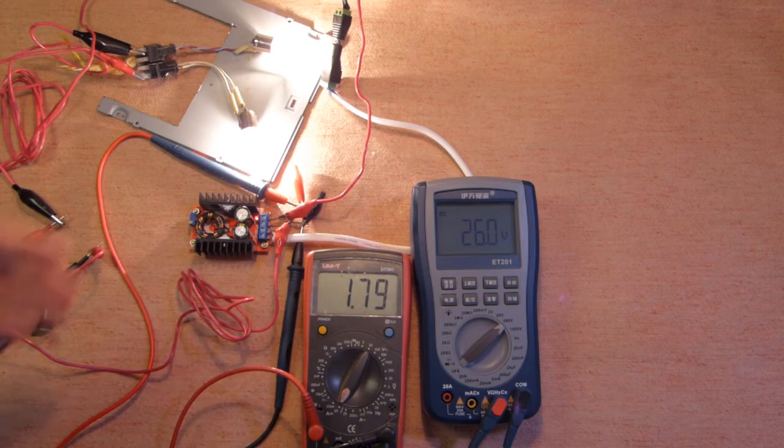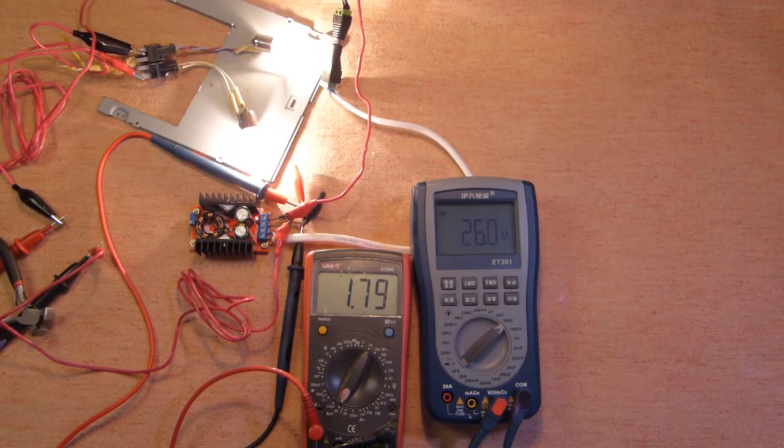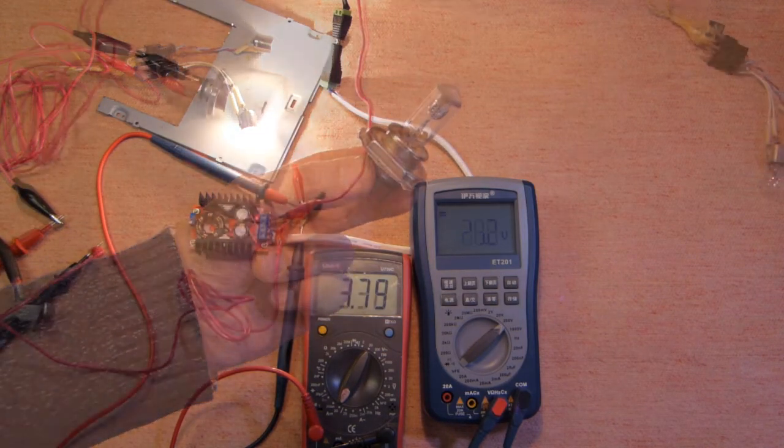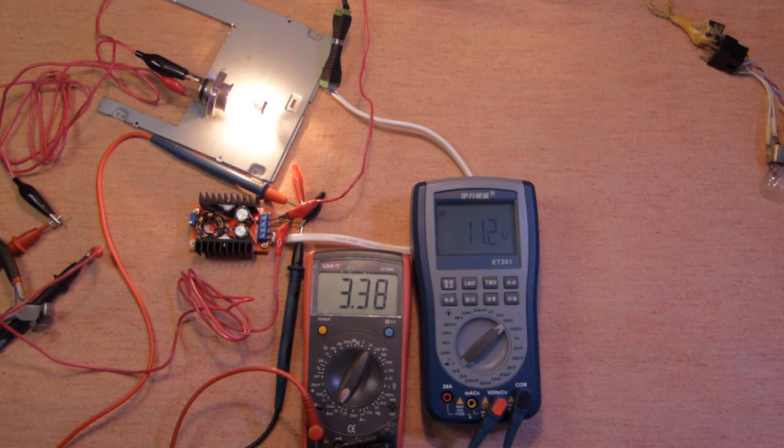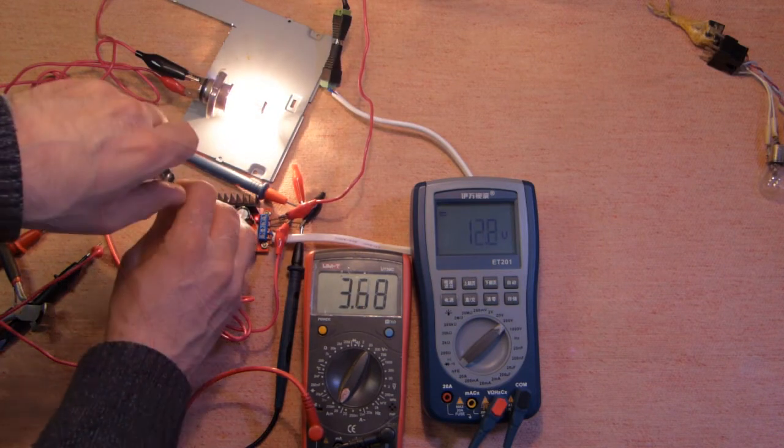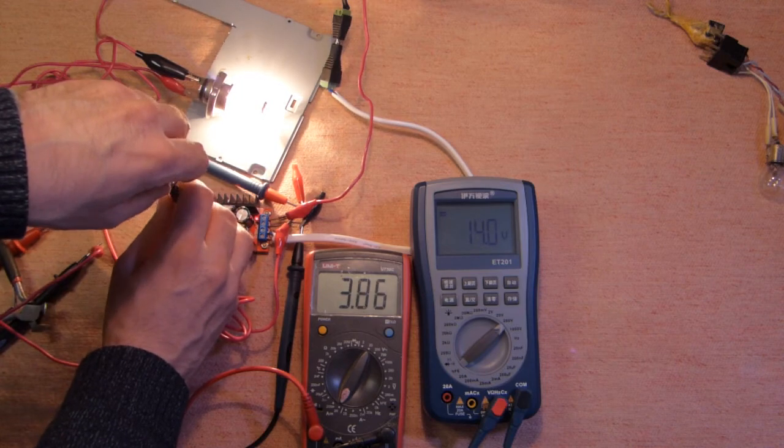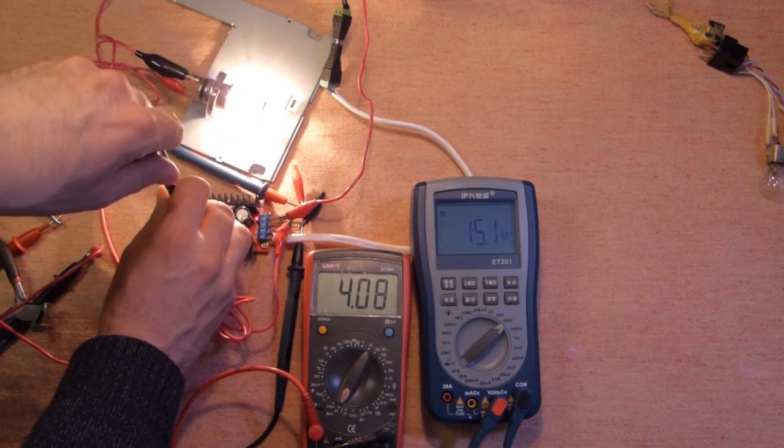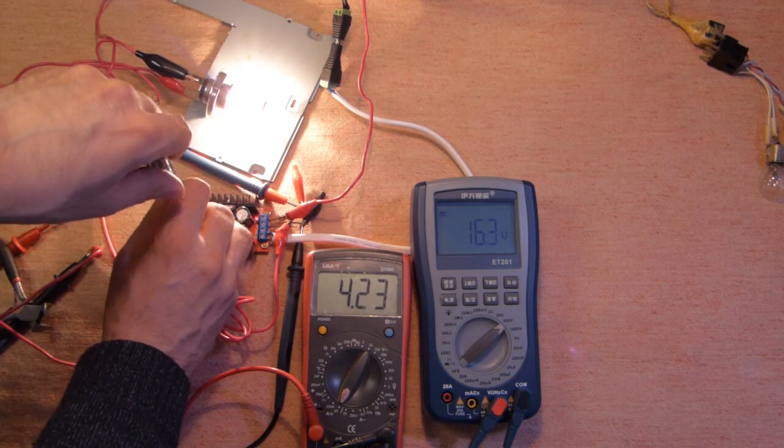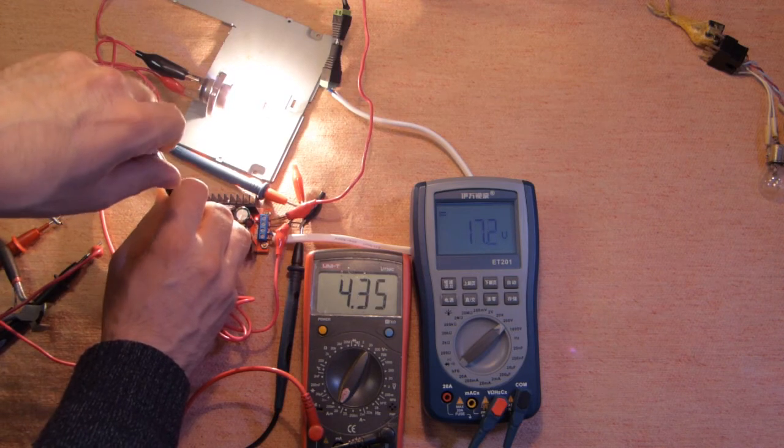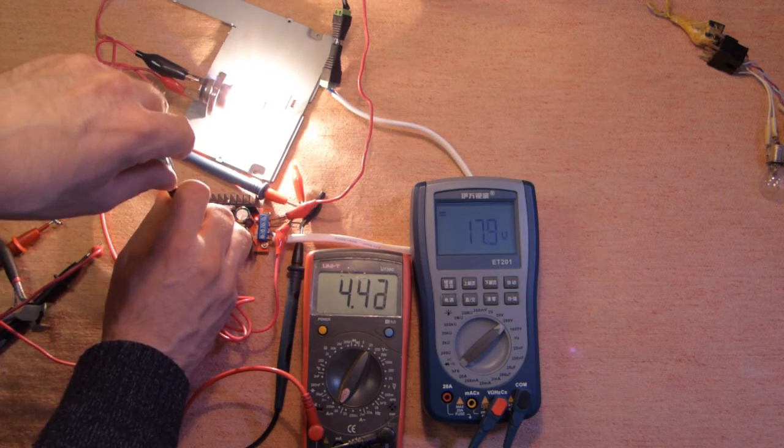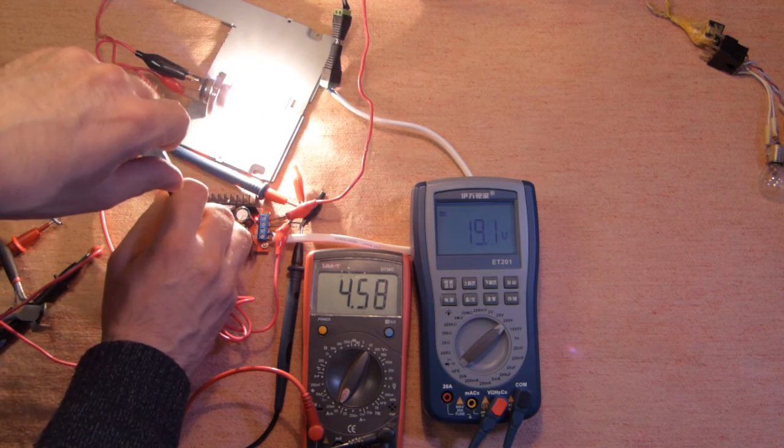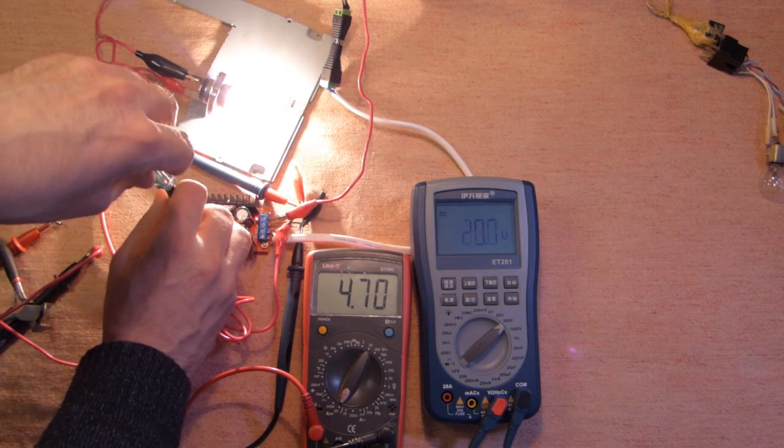This amperage is okay for this device. Now let's check this DC-DC step-up converter with this car bulb. I have decreased the voltage of the converter and let's increase it. 12, 13, 14, 15, 16, 17, 18, 19, 20.